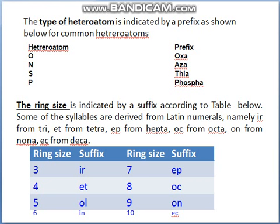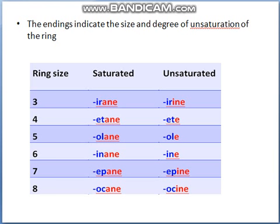Continuing the suffix table: eight gives -oc, nine gives -on, ten gives -ec, and so on. Some of these suffixes are derived from Latin numbers: tria, tetra, hepta, octa, deca, and so on. The ending indicates the size and the degree of saturation of the ring.